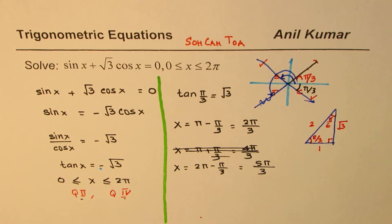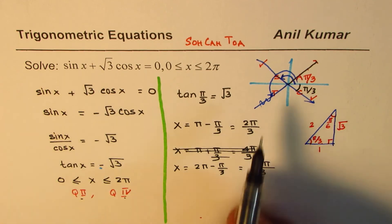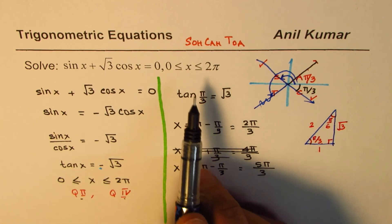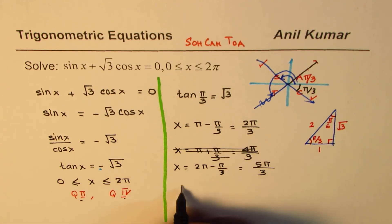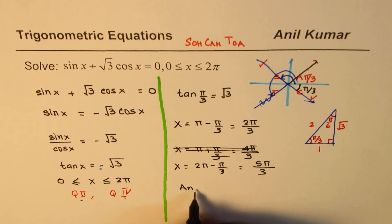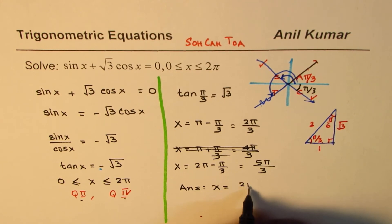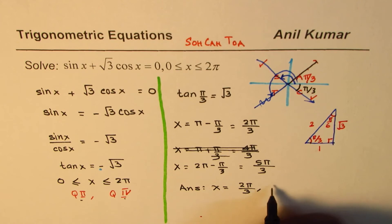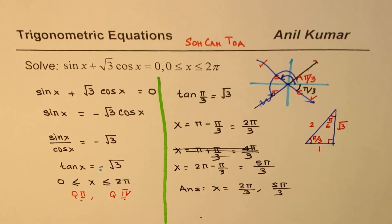So these are the two solutions for angle x in the domain 0 to 2 pi. We can write our answer as x equals 2 pi by 3 and 5 pi by 3. That is how we get the answer.